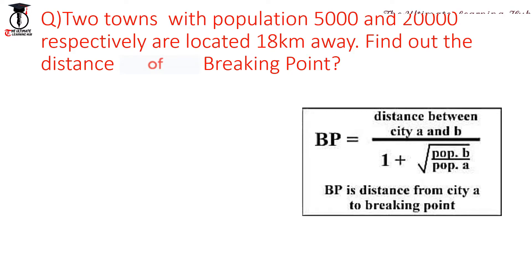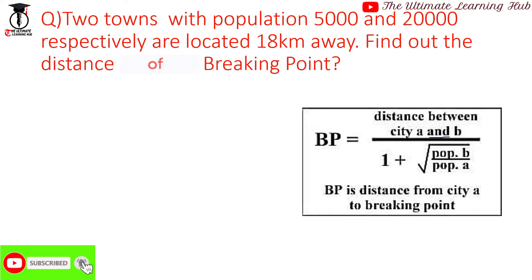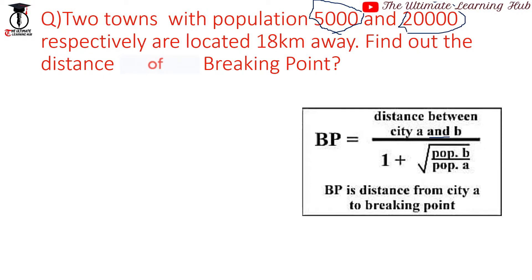The formula for breaking point is: BP equals the distance between city A and city B, divided by 1 plus the square root of (population of B divided by population of A).